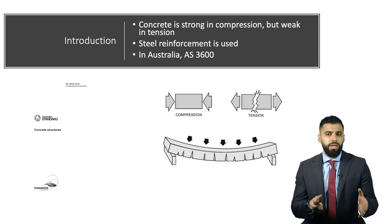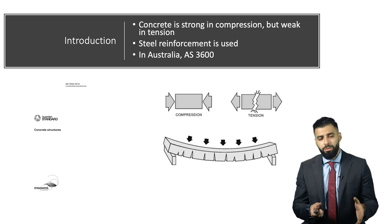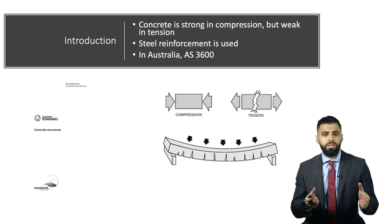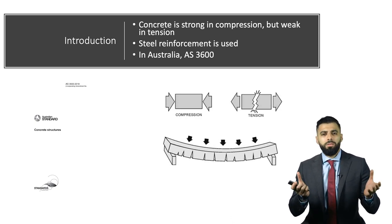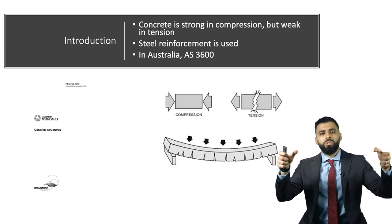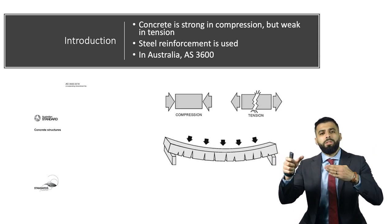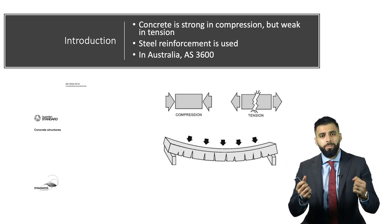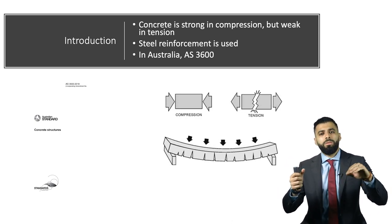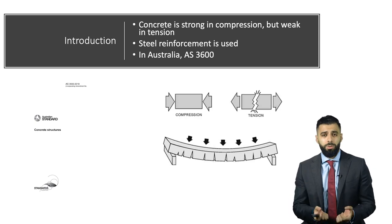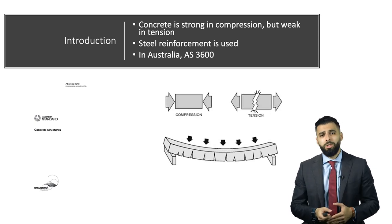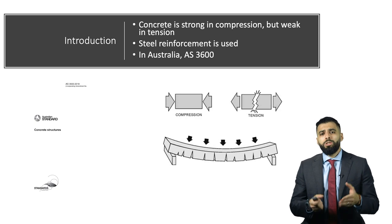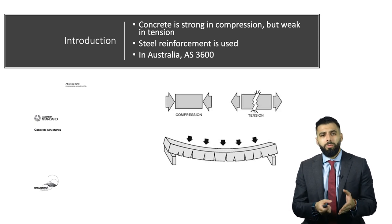We all know that concrete is strong in compression but weak in tension. If I have an element in my hand and I bend it upwards, the bottom end of that element would experience tension, whereas the top bit is going to be experiencing compression — you can see that in the image in front of you. So to compensate for that weakness in tension, we add steel reinforcement.